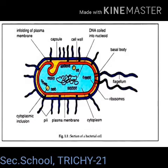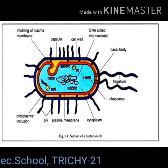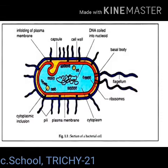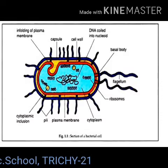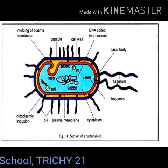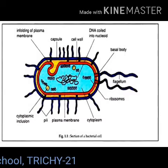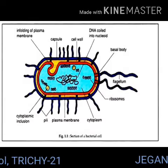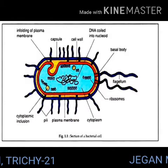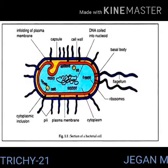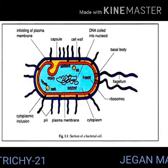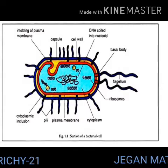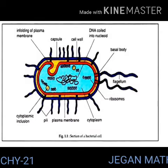The bacterial cell wall is granular and rigid. It provides protection and gives shape to the cell. The chemical composition of the cell wall is rather complex and is made up of peptidoglycan or mucopeptide. One of the most abundant polypeptides called porin is present, and it helps in the diffusion of solutes. Diffusion means the movement of molecules from higher concentration to lower concentration.